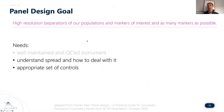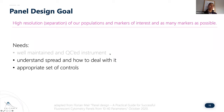I want to zoom back out and ask: what is the goal of panel design? I've adapted this slide from Florian Mayer — it's high resolution of populations and markers of interest with as many markers as possible. The ingredients: well-maintained QC instrument, understanding spread and how to deal with it — which is the primary contributor to loss of resolution — and an appropriate set of controls. With Nova fluorophores, once bound to an antibody, the fluorescence doesn't change, so you can use CD4 or CD8 to compensate.